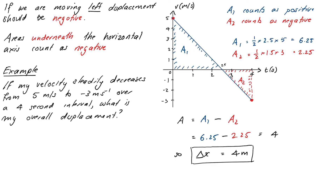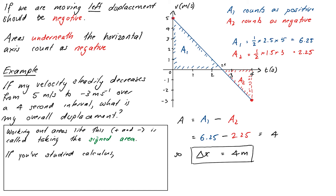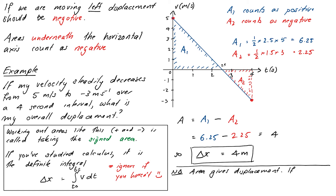Working out areas in this way is called finding the signed area underneath our curve. For those who've done calculus, you may know this as a definite integral — but again, we're not doing calculus in this course. One final note: the area gives us the overall displacement. If we want the final position, we also need the initial position xi, and then xf equals xi plus delta x.